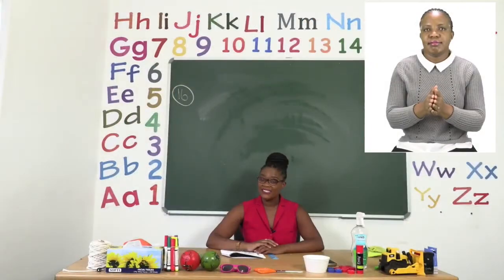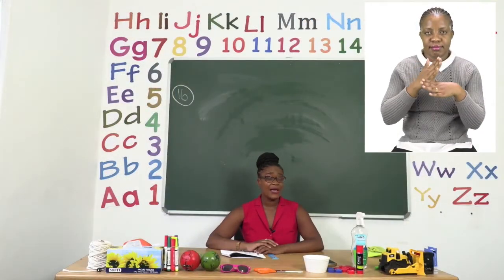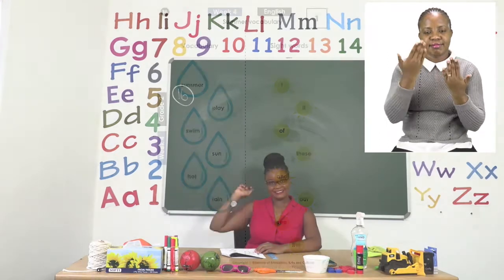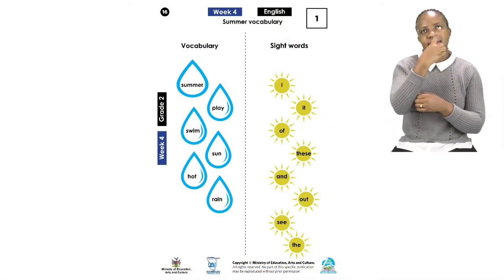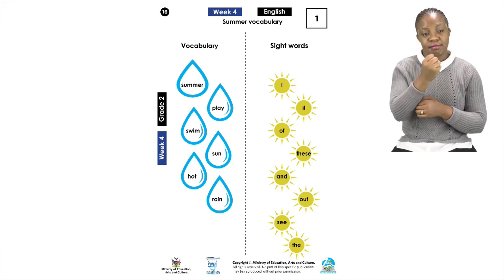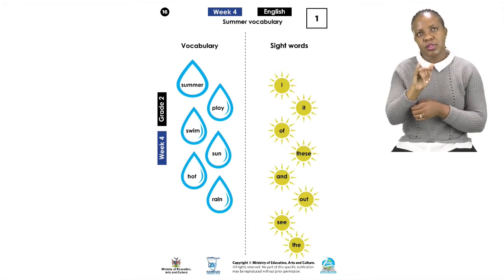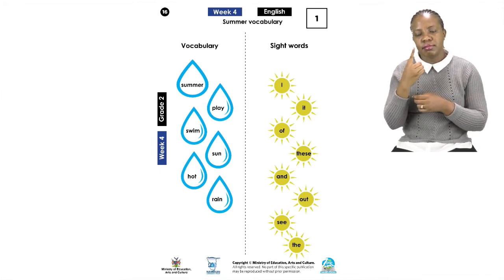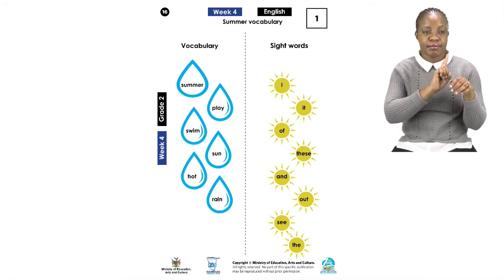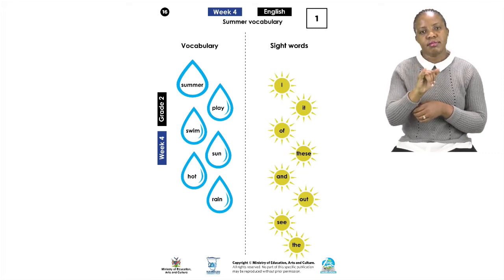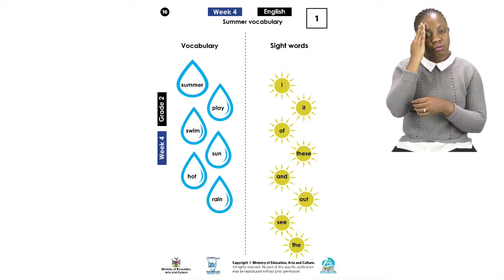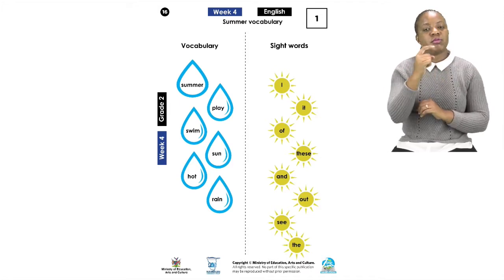For our first exercise boys and girls, please turn to page 16. On page 16 we have our vocabulary words as well as our sight words. Let's start with the vocabulary words. Remember, vocabulary words are words that may be new to us that we need to know and use often so that we can improve our English. Today we have the words — repeat after me: